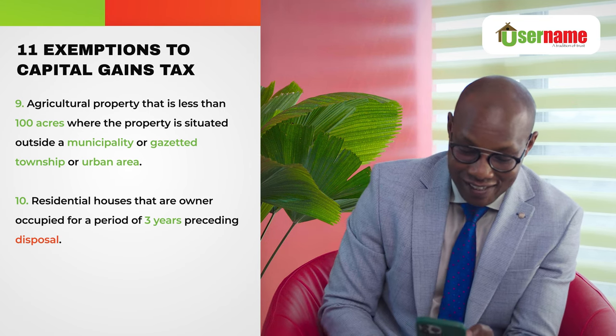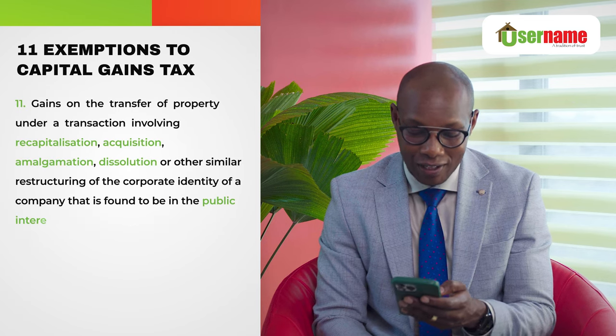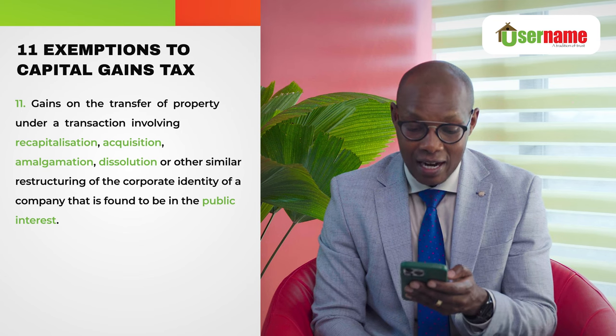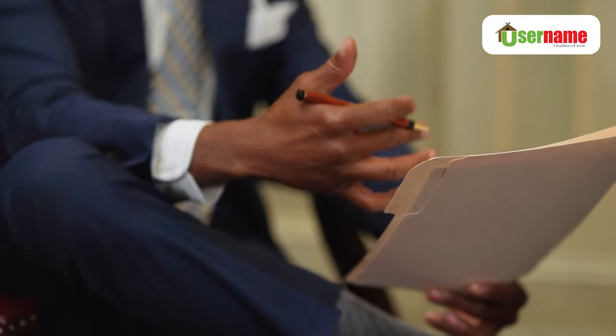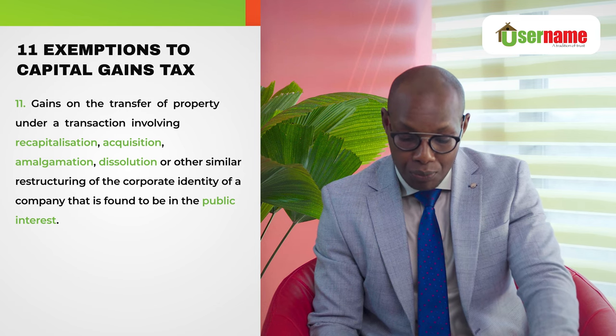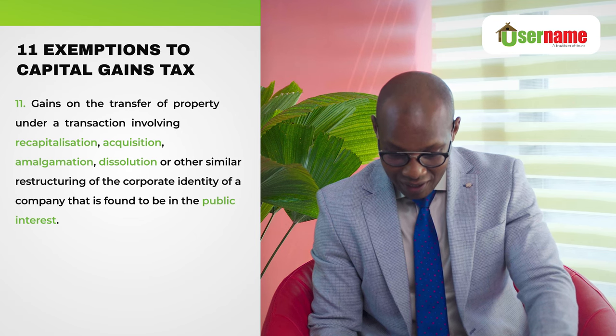Number ten: residential houses that are owner-occupied for a period of three years preceding disposal. Number eleven: gains on transfer of property in a transaction involving recapitalization, acquisition, amalgamation, dissolution, or any other restructuring of the corporate identity of a company that is found to be in the public interest. Basically, any gains you get when you transfer property for a transaction involving those things, where there is a public interest, you are exempt from capital gain tax. Those are 11 exemptions to capital gain tax.